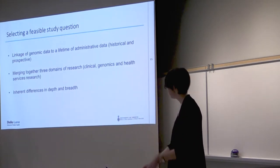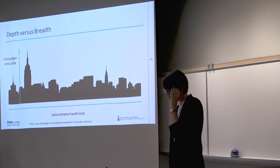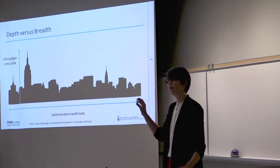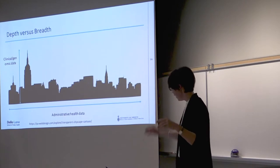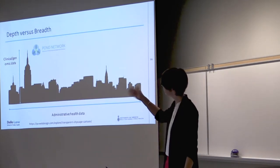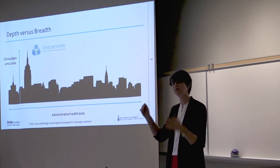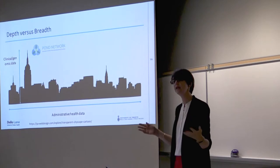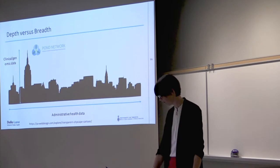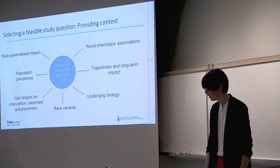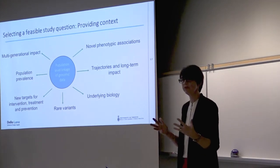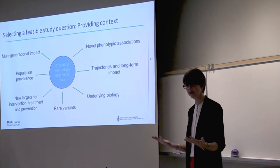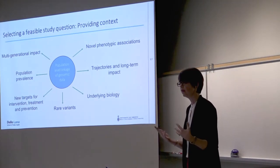In doing so, we had to bring together three areas of research: clinical, genomics, and health services research — people who typically deal just with administrative data. There is inherent difference in the depth and breadth of the data. Clinical and genomic studies typically have a lot of information about a smaller number of people, whereas administrative data gives very high-level data on a large number of people. POND is like the Empire State Building — a highly phenotyped, relatively small group — and we can then link it forward and backward in time, allowing these different sources of data to complement each other. If we could accomplish population-level linkage of genomic data, there is a lot that could be gained from that.